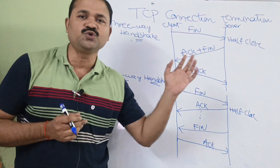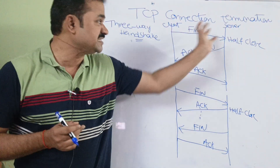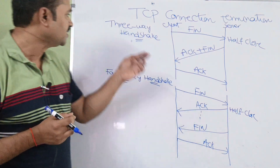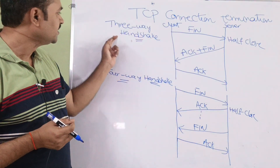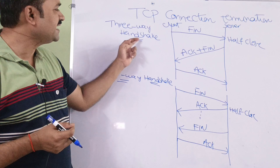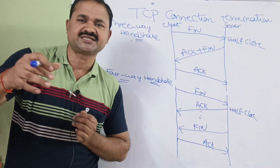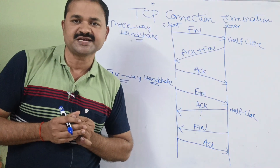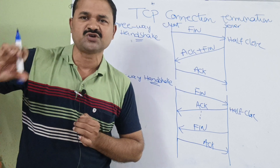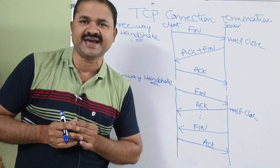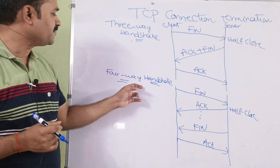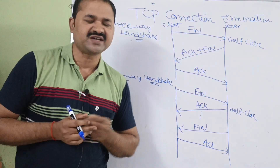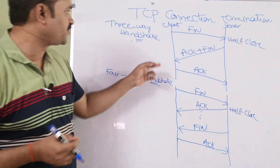We can do TCP connection termination in two ways. The first approach is using a three-way handshake, just like TCP connection establishment. The second approach is a four-way handshake. First let us see the first approach.